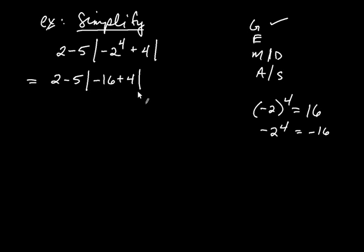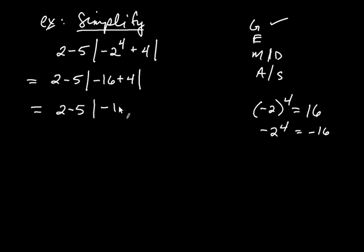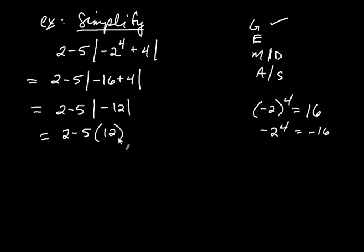Now there's still work to be done inside the absolute value bars: negative 16 plus 4. I'm at the step of addition, but applied within G still — I'm still within G in GEMDAS. So it's going to be 2 take away 5, and the absolute value of negative 16 plus 4 is negative 12. What's the absolute value of negative 12? It's positive 12. So it's 2 take away 5 multiplied by positive 12.